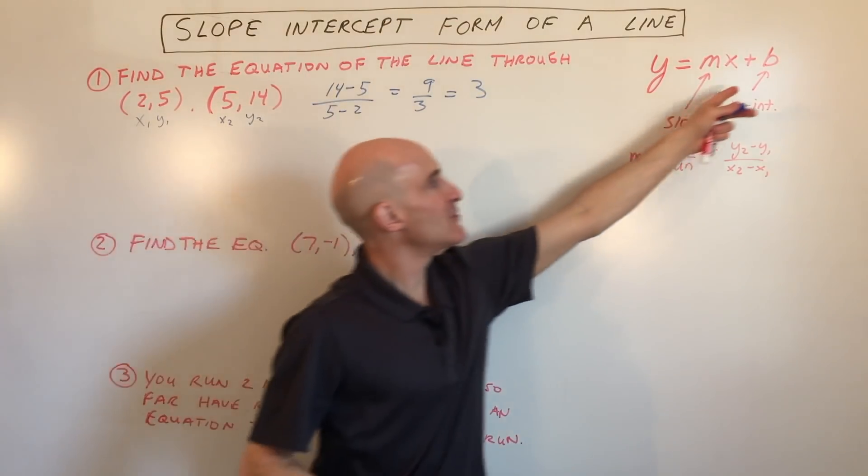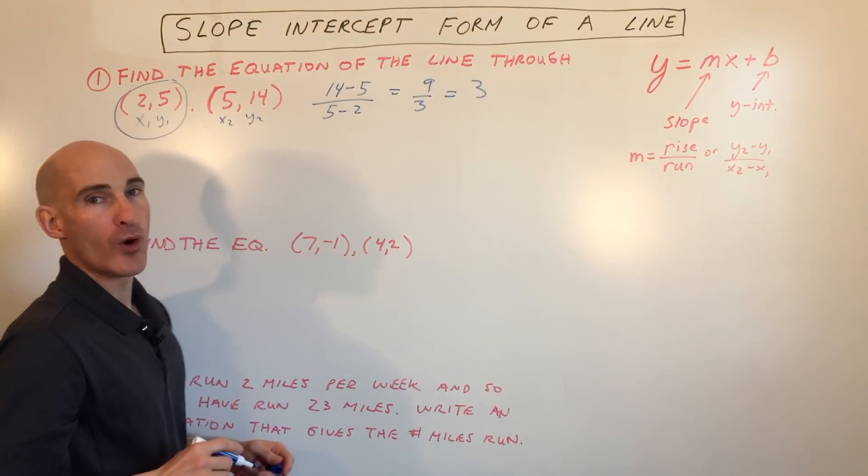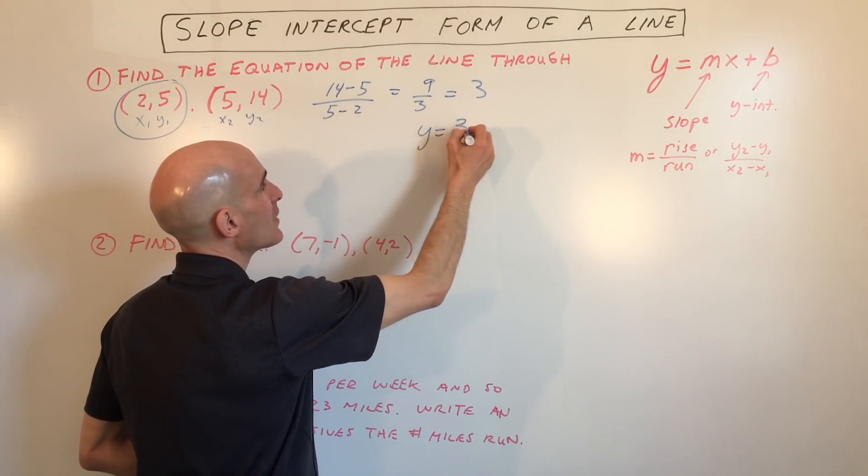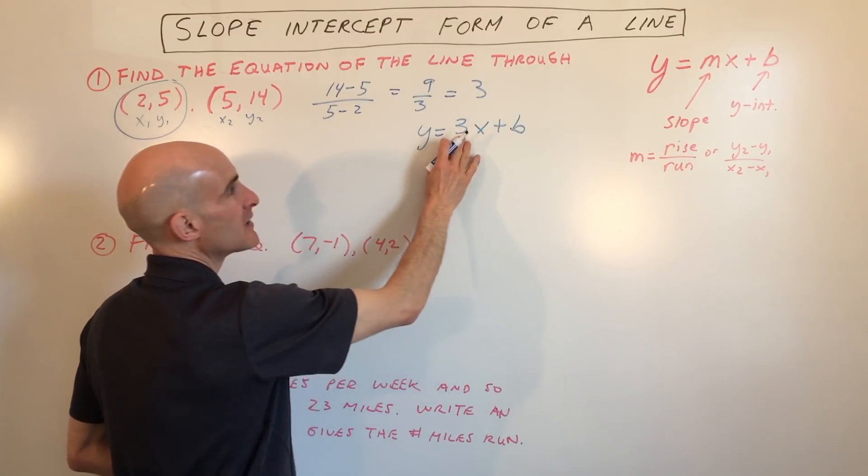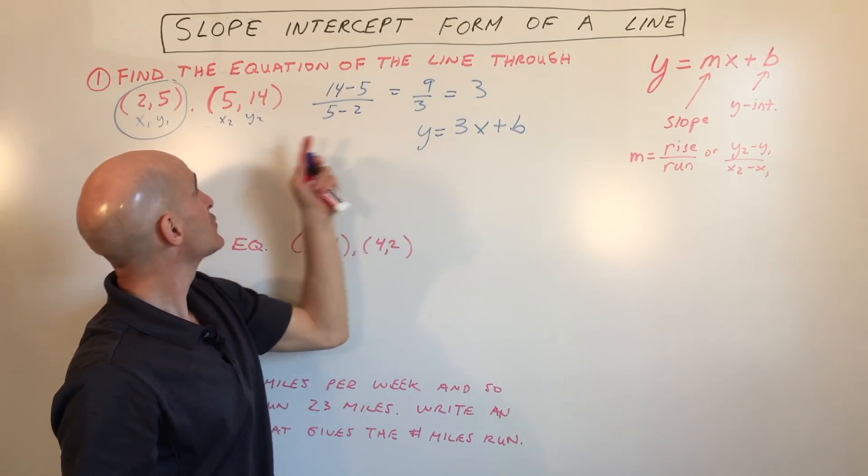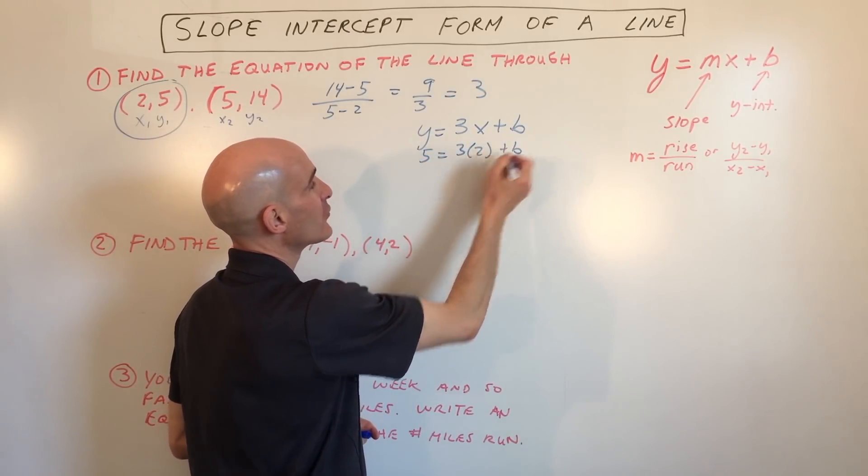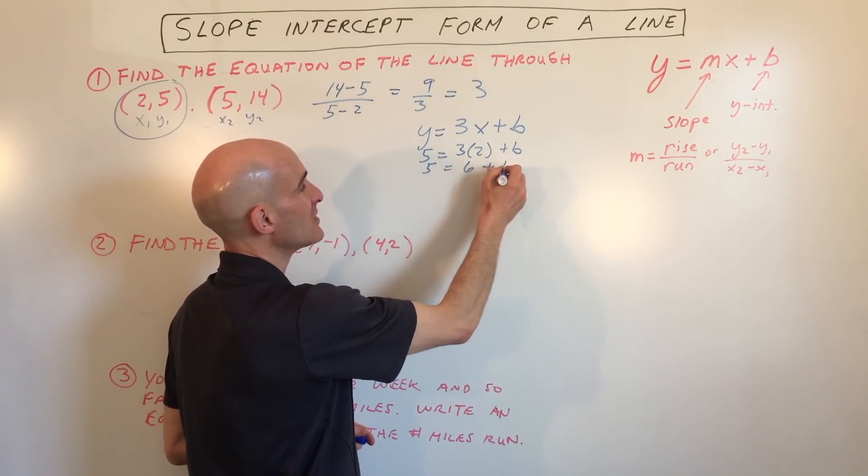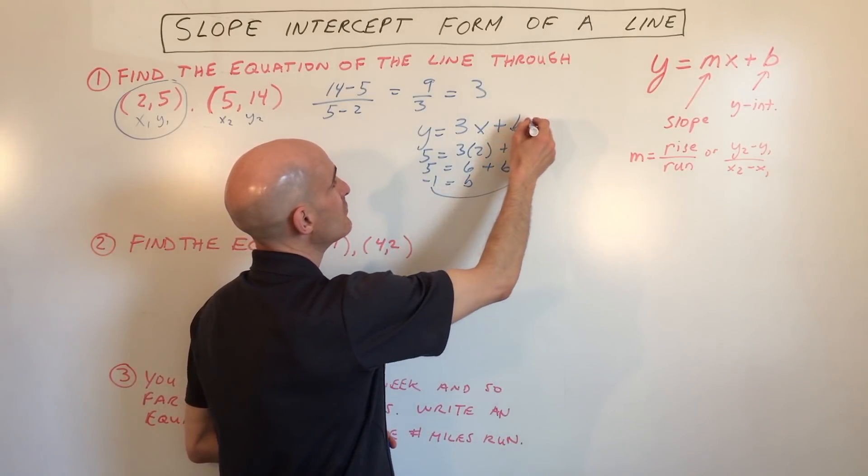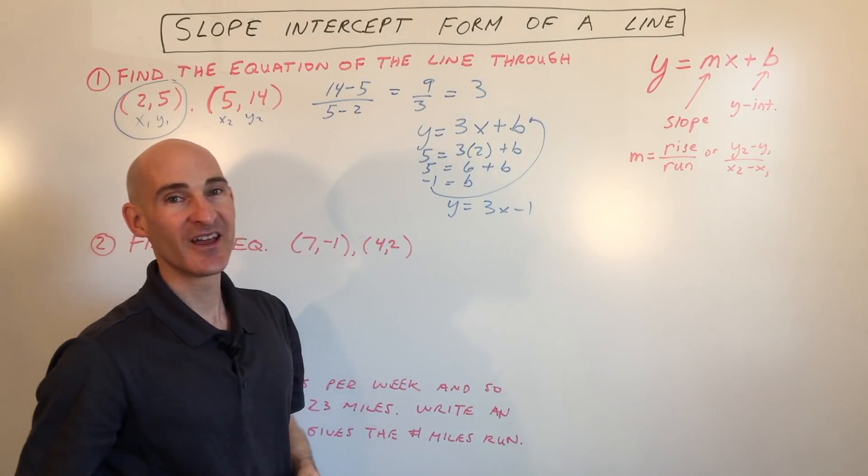Now we need to find the b value, the y-intercept. We're going to pick one of these points - I'm going to pick the smaller point with smaller numbers because it's easier to work with. Let's put this in our equation: y equals 3x plus b. I put the slope in for m. But we need to find what b is. By putting 2 and 5, five for y, two for x, we can solve for b. So 5 equals 6 plus b. By subtracting 6, we can see that b equals negative 1. By putting that back into our equation, we have y equals 3x minus 1.